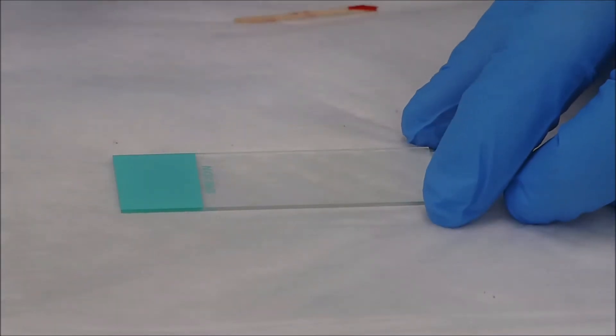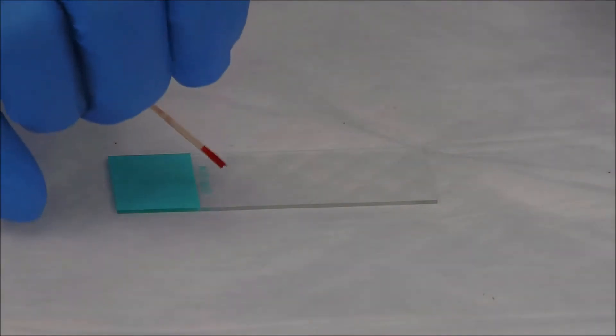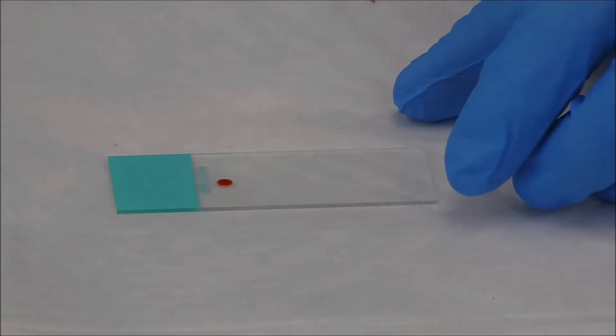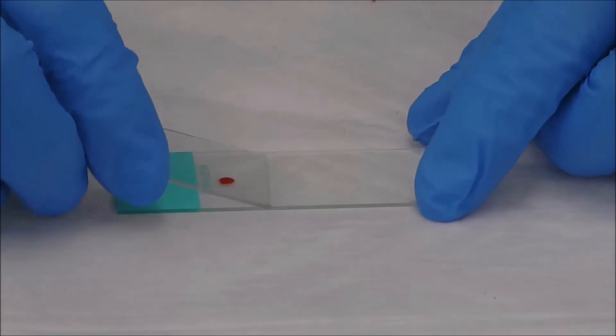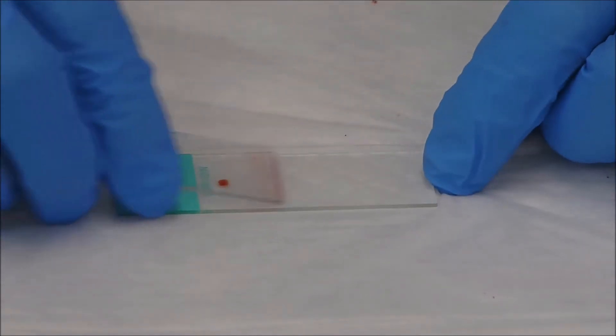So once again, we're going to take our sample, place a little drop of blood there. And then take our spreader slide, which we have to have ready. We're going to pull back over that, wait until it runs up and down, and then push forward evenly.